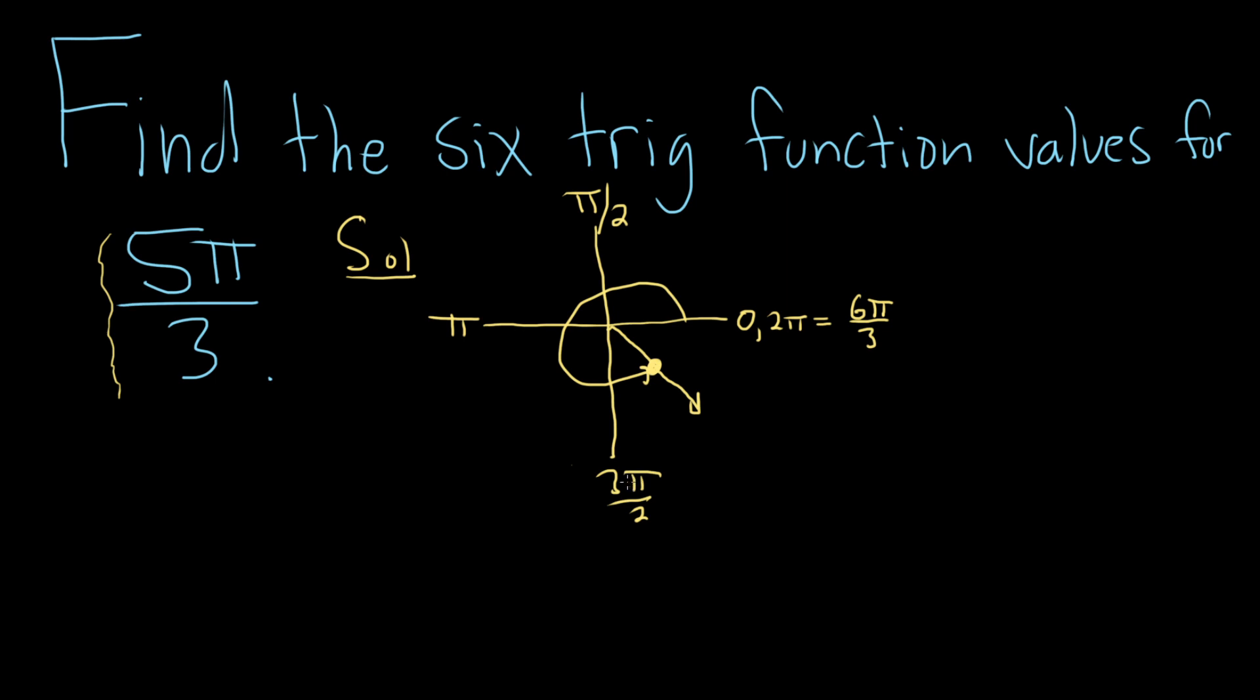So now we have to find the reference angle. To find the reference angle, after you draw your angle, you just go to where it ends, and you go counterclockwise to the x-axis. So there it is. Because I'm going counterclockwise and I stop at the x-axis. So if this angle here is 5π/3, and this one is 6π/3, this reference angle is π/3.